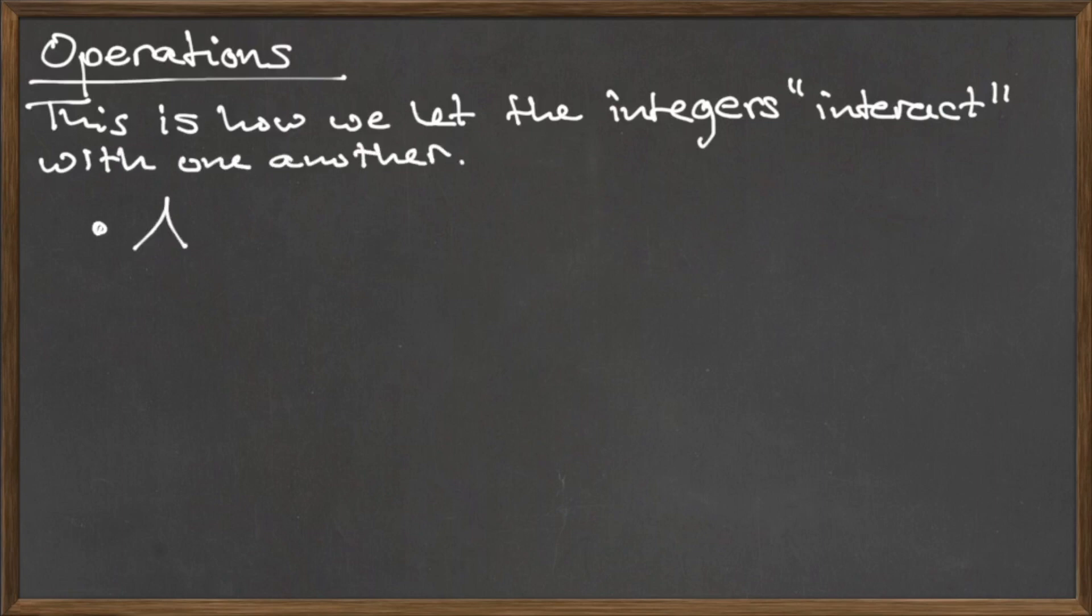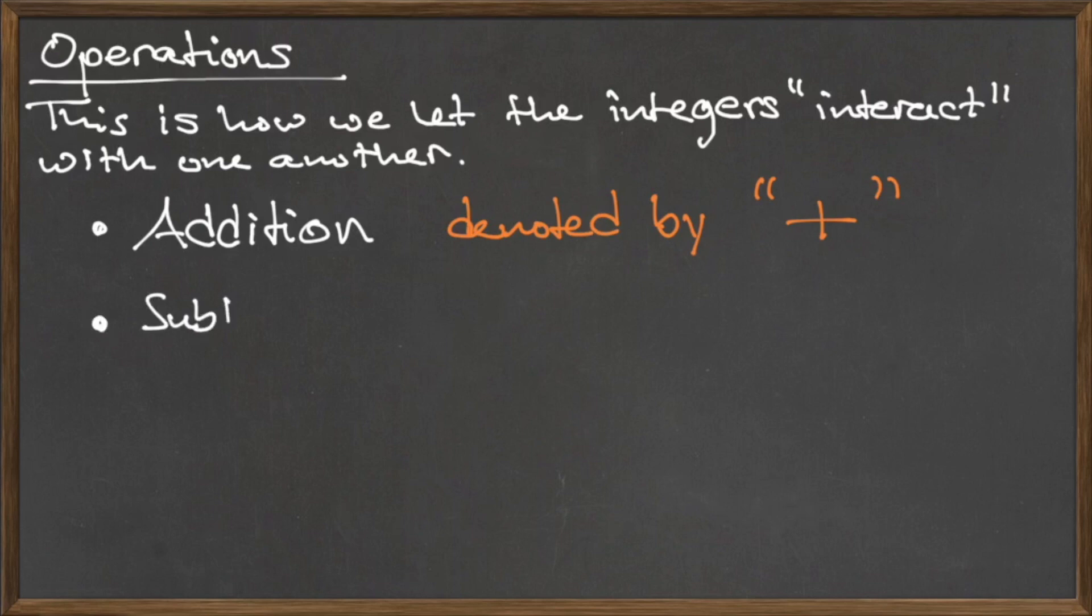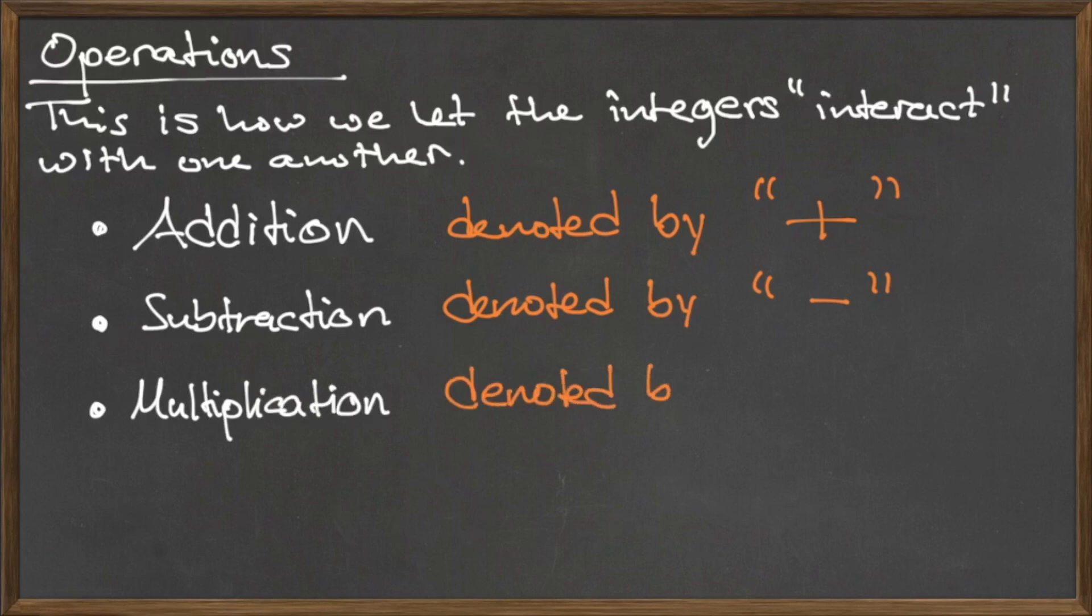The main operations are addition denoted by the plus sign, subtraction denoted by the minus sign, and multiplication denoted by a dot. You may have seen multiplication previously represented with an X, however we will refrain from using this notation for multiplication since X is often used as a variable, which will be a topic we will cover later on in this video series.